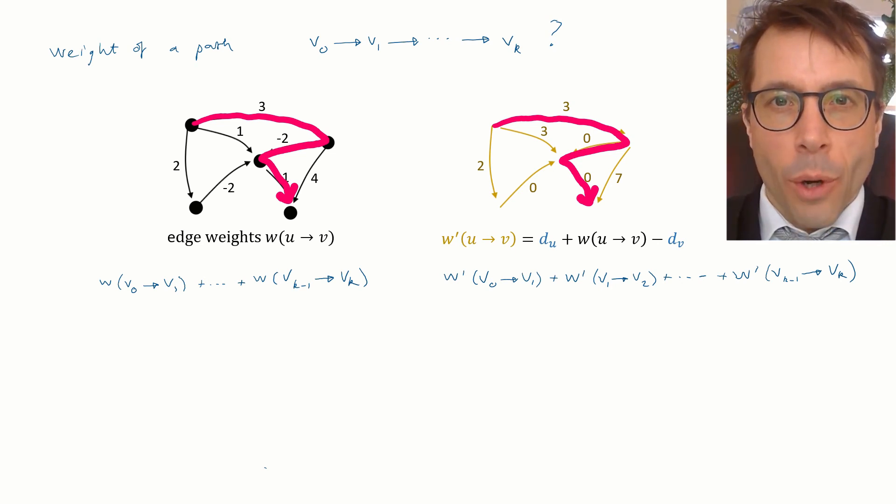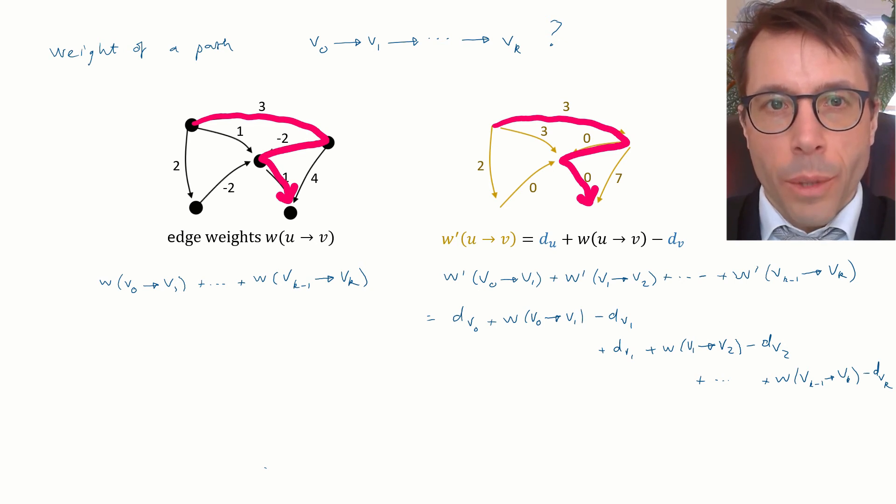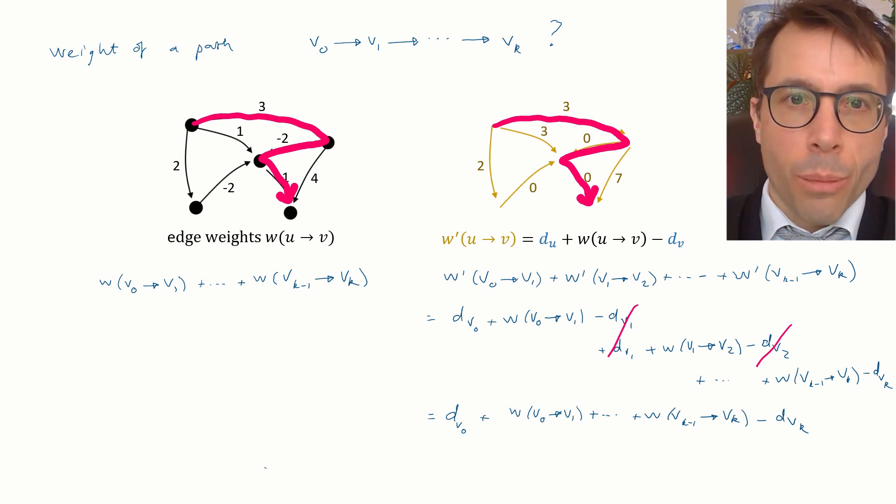And now the magic. Let's expand the sum on the right using the definition of w'. Each w' expands into something with d's and w's, and the magic is that the d's all cancel out, all except the first and the last. And so this is what we end up with.